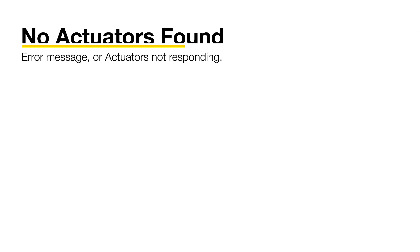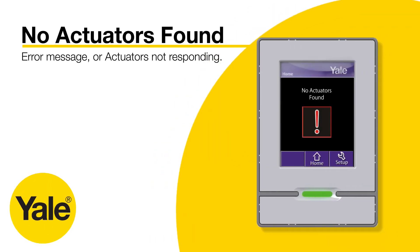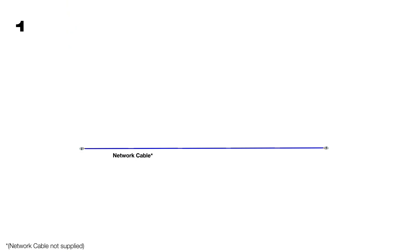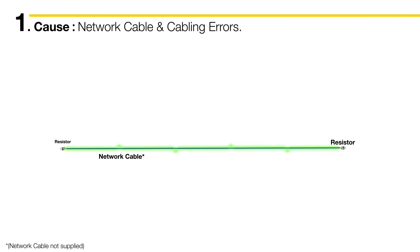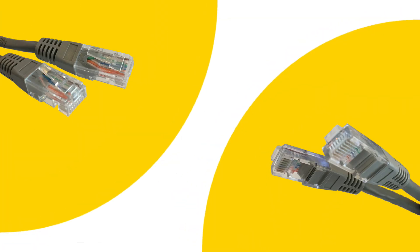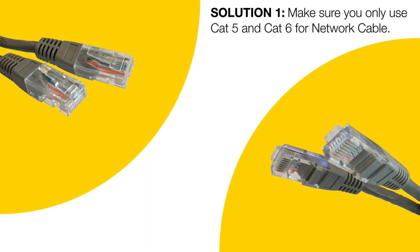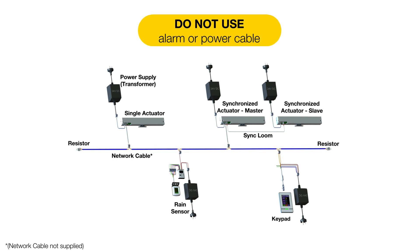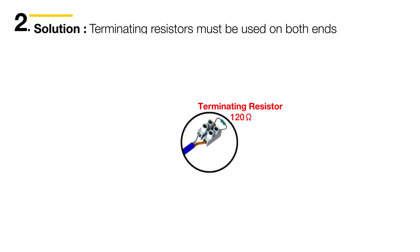If you're getting a No Actuators Found error message, or the actuators are failing to respond to an open command, one of the most common causes is the network cable. The network cable carries data communication signals between all the devices on the network, so you must use data cable with twisted pairs. Cat 5 or Cat 6 data cable works well. Cable that does not contain twisted pairs, such as alarm or power cable, will not work, as the network needs a cable impedance of 120 ohms to communicate properly.